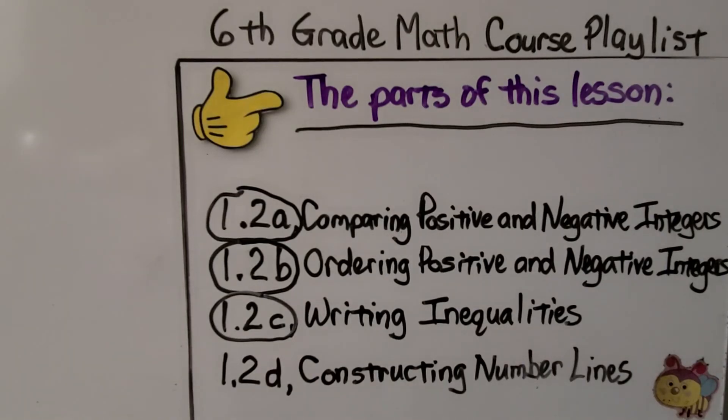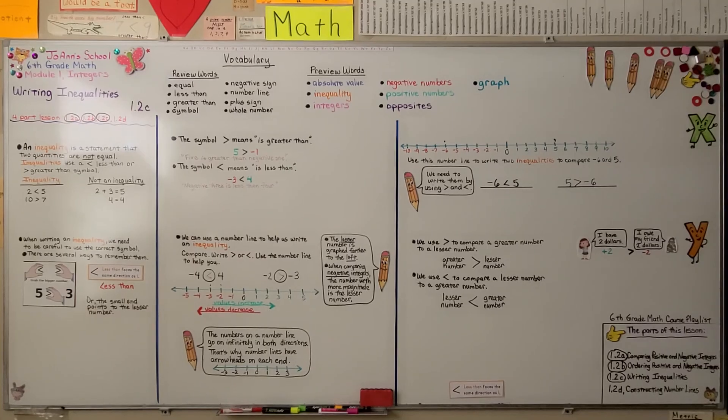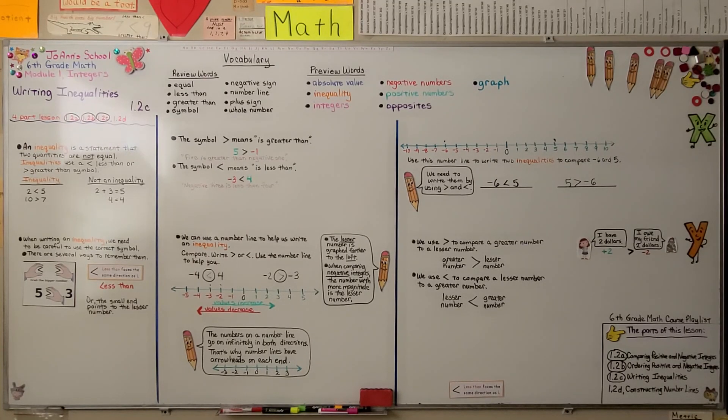So I'll add this video to the 6th grade math course playlist. And our next lesson, the last part of 1.2 is 1.2d. We're going to talk about constructing number lines. We want to make number lines that will help us and that will fit the problem. Remember to be very careful to pay attention to the sign before the number when you're writing these inequalities so you have the symbol facing the correct direction. I hope you have a really nice day and I hope you'll join me next time. And I also hope you'll hit the like button for me. Bye.